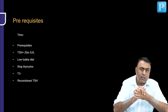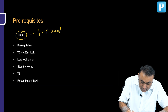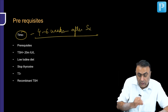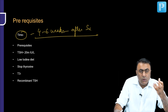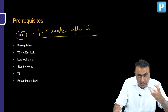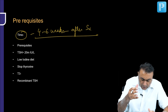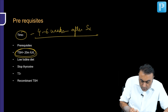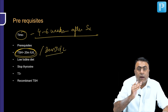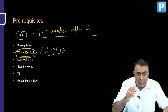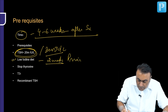What is the timing and prerequisites for a whole body iodine scan? The preferred time is 4 to 6 weeks after surgery. The TSH level in the blood should be at least more than 20 milli-international units per liter. To achieve this, the patient has to be kept on a low iodine diet for at least 2 weeks prior to the scan, and thyroxine should be stopped at least 4 to 6 weeks prior to the scan.